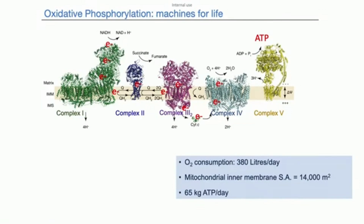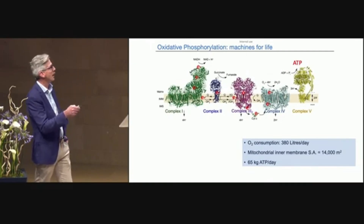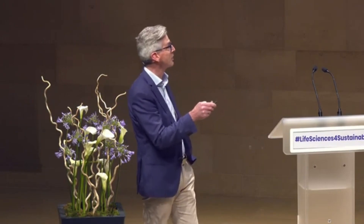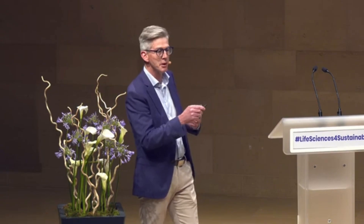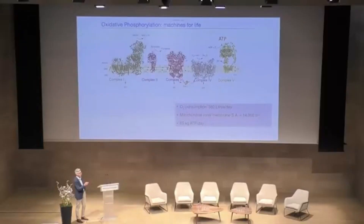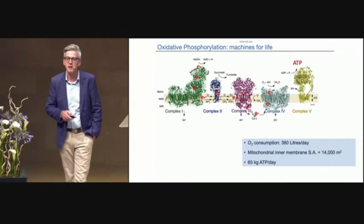Those processes of electron transport drive proton pumping across the membrane, and that proton gradient is then pulled back through an enzyme complex that rotates like an incredible rotor to generate ATP. We use about 380 litres of oxygen a day to drive ATP production. If we stripped out the inner membrane of mitochondria from our bodies, it would cover 14,000 square metres of surface. And if we couldn't recycle ATP and had to make it all the time, we would be producing 65 kilos of ATP per day.